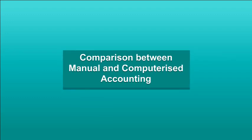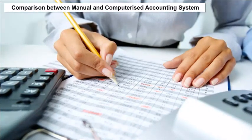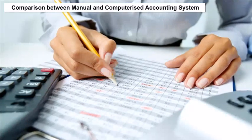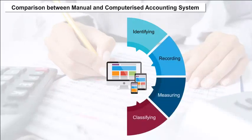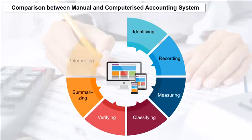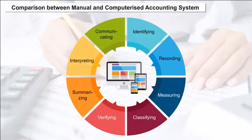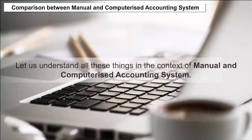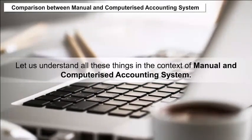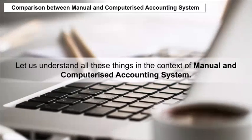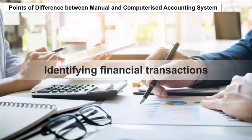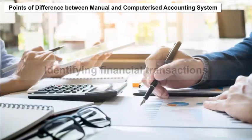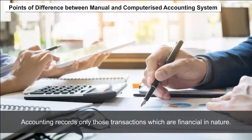Comparison between manual and computerized accounting system. Accounting is a systematic approach of identifying, recording, measuring, classifying, verifying, summarizing, interpreting, and communicating financial information. Let us understand all these things in the context of manual and computerized accounting systems, looking at the key points of difference.